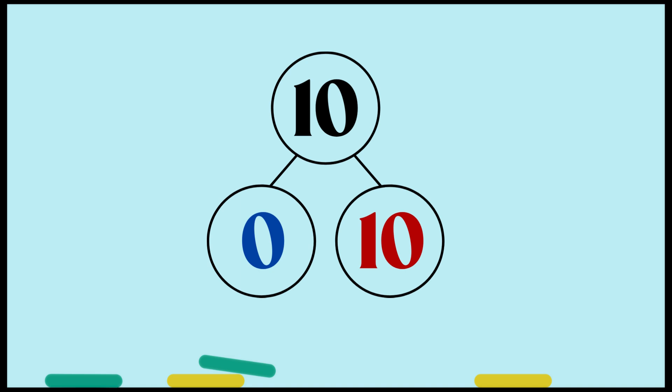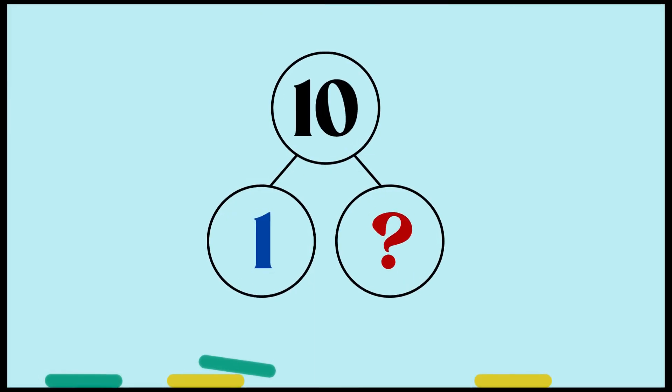Ten is just ten by itself if there is a zero. Next one — one and what else makes 10? You guys can figure this out by subtracting one from ten — that's a hint! If you said nine, that's correct. As we discussed, one and nine make 10.